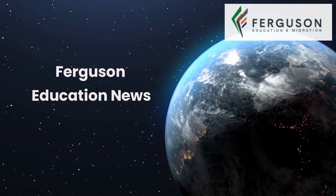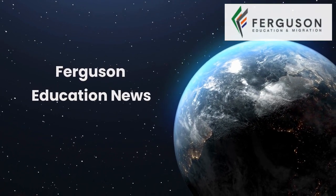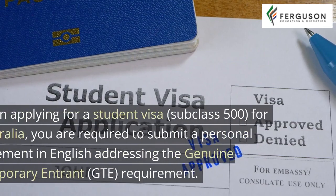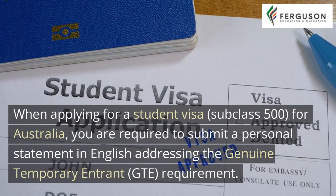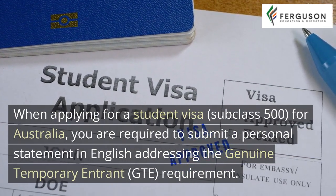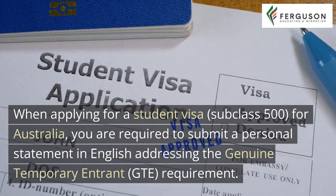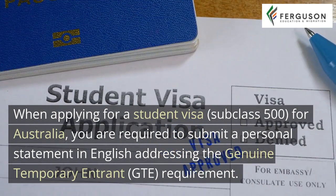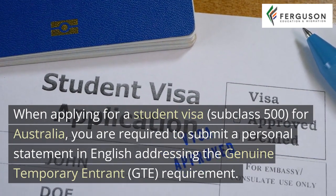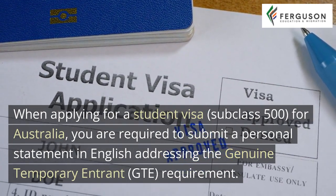Ferguson Education News. When applying for a student visa, subclass 500, for Australia, you are required to submit a personal statement in English addressing the genuine temporary entrant (GTE) requirement.